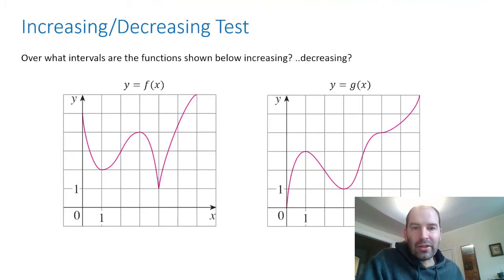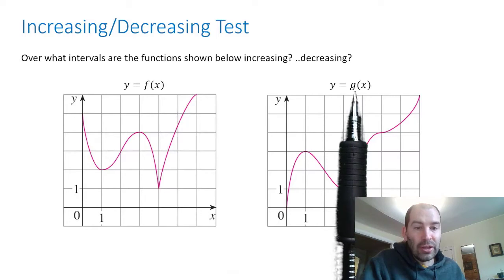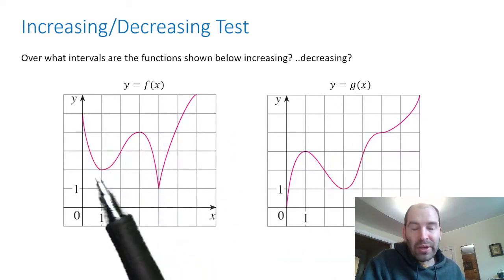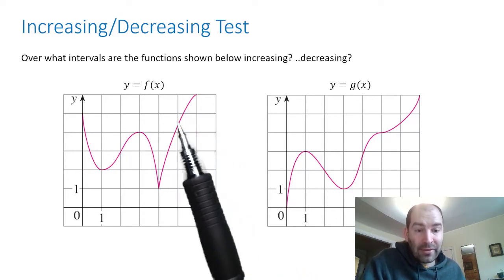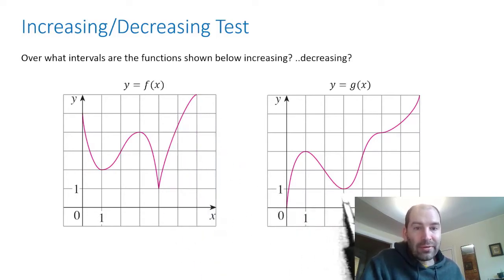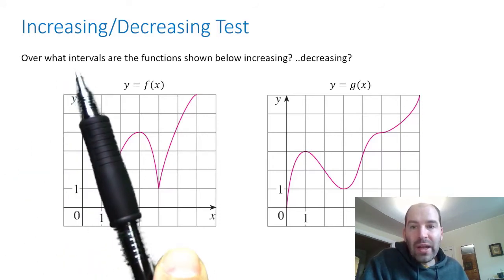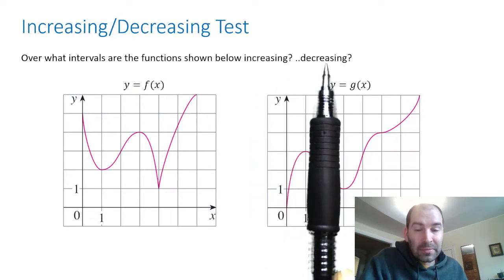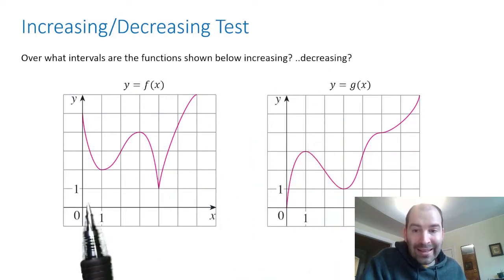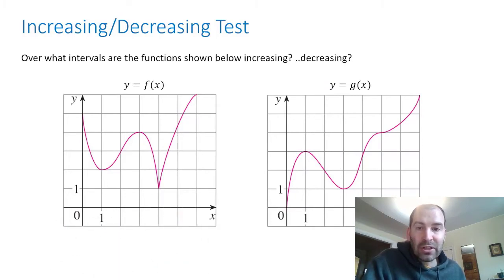So here we have two functions — a function f and a function g. We've plotted the points x, y given by y equals f of x, and that's the graph of f. And here we have the graph of g. The question is: over what intervals are the functions increasing or decreasing? What intervals of numbers on the x-axis are these functions increasing or decreasing?